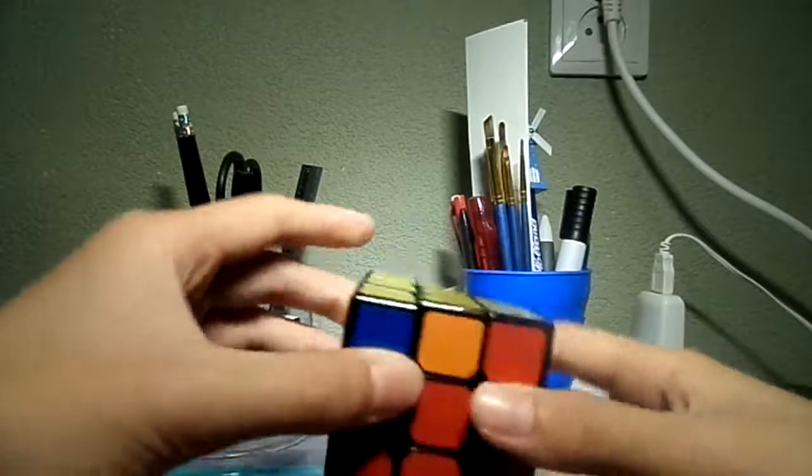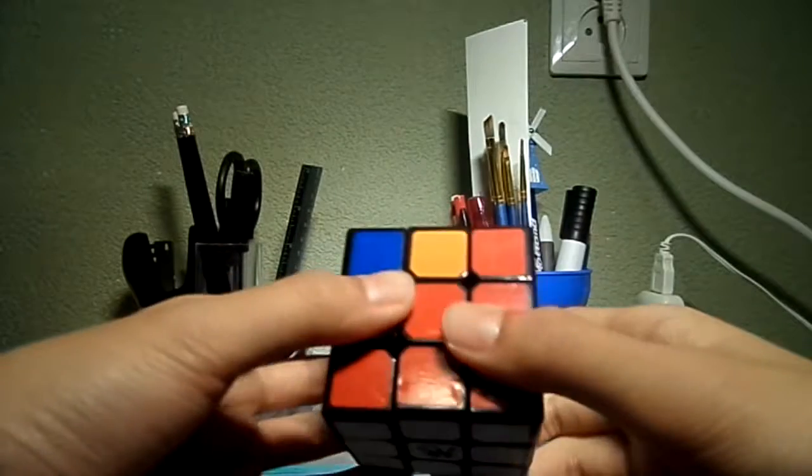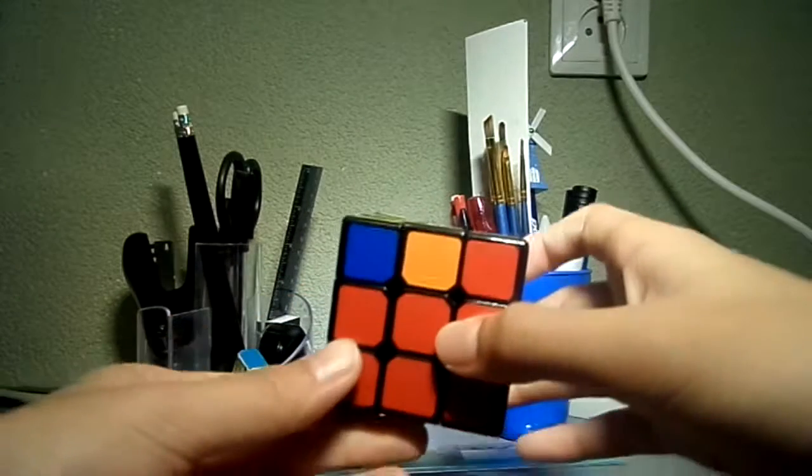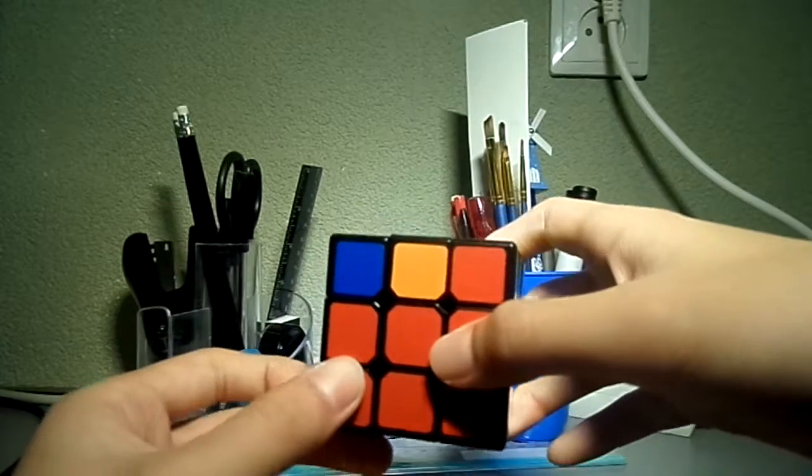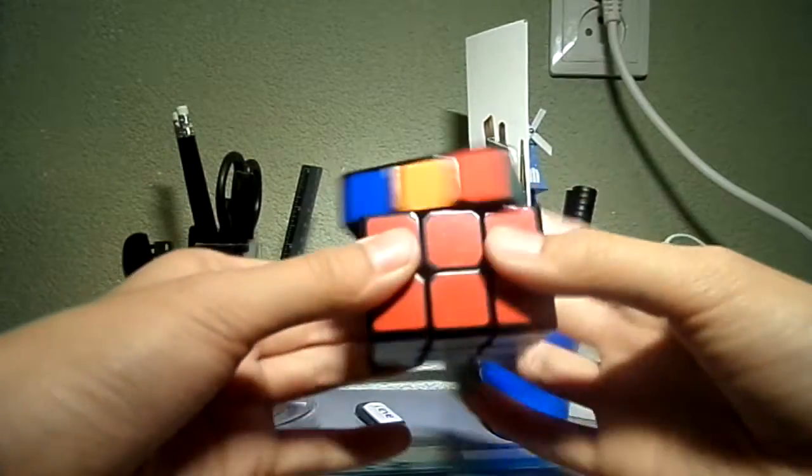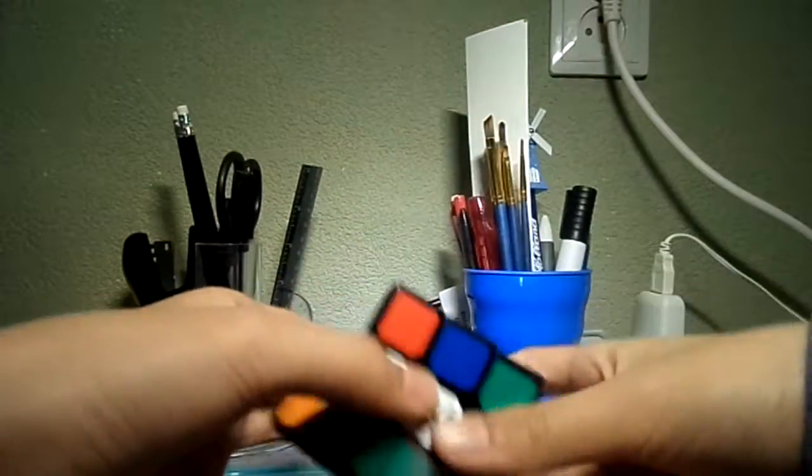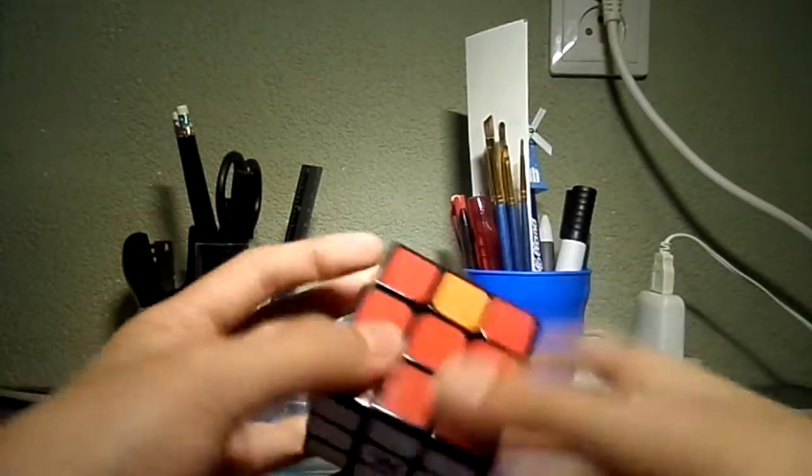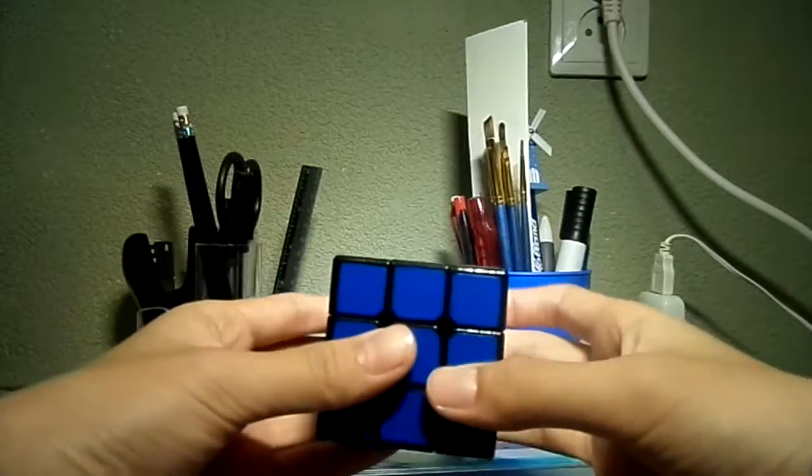This is what we call a G perm. No one likes these perms, I don't know why. So in Two Look, it looked like this. There you go, that was Two Look.